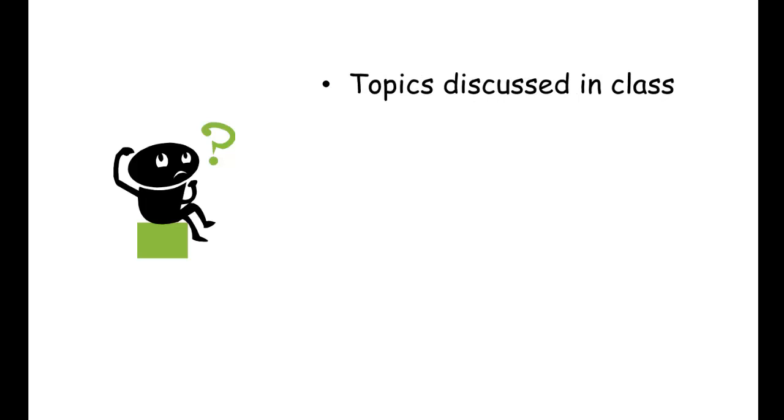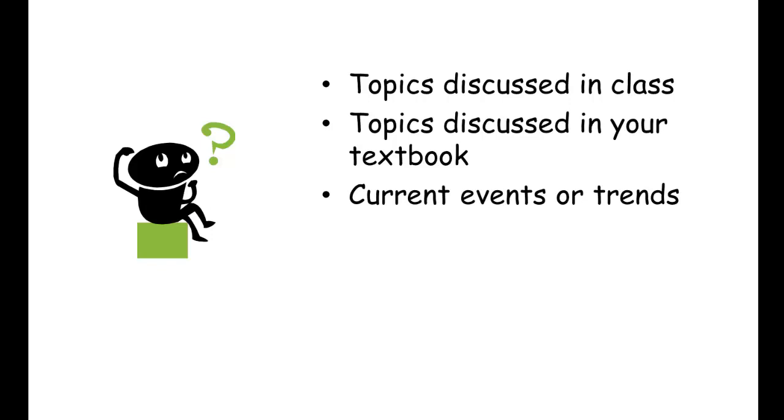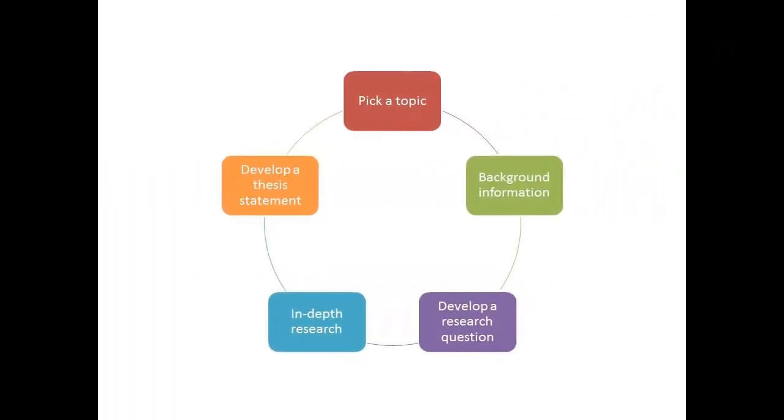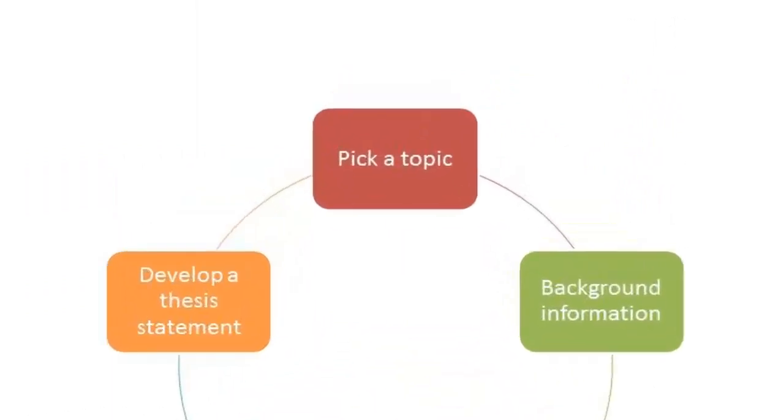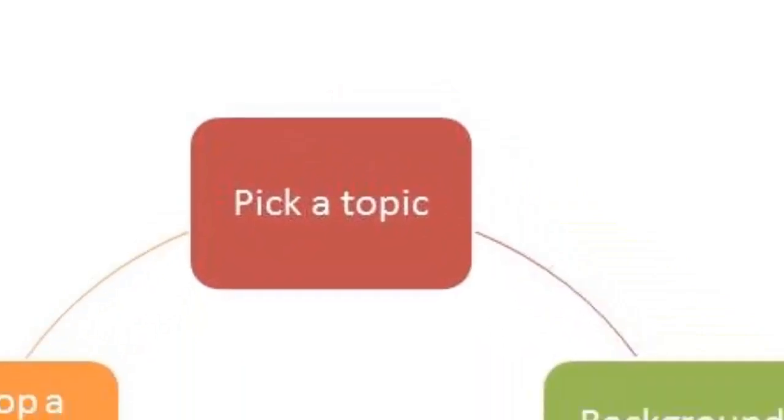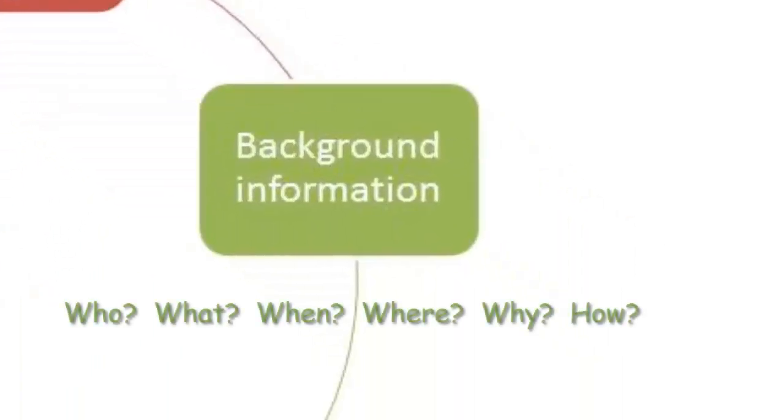You can begin by reviewing topics discussed in your class, in your textbook, reviewing current events or trends, or even your personal interests. It's important to understand that research is a process and it can take time to develop your topic and write your paper. Once you pick a general topic you should do some background research or preliminary research.